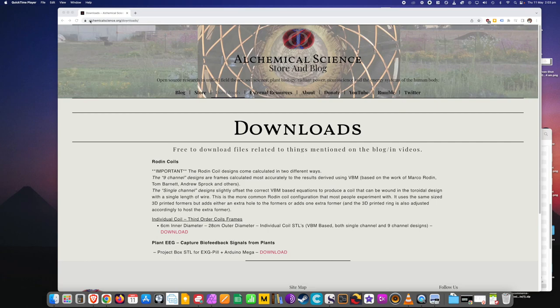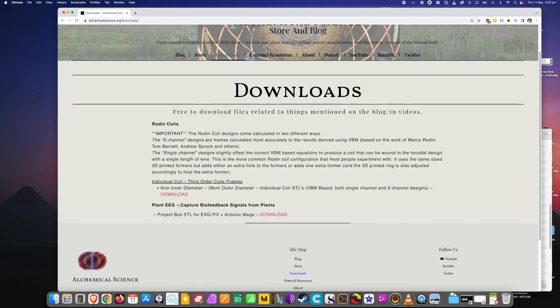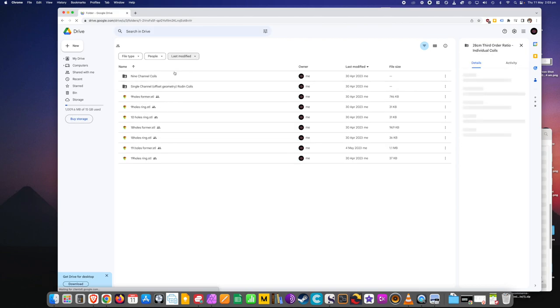If you're printing the coil yourself, you just need to jump on the downloads page, the alchemicalscience.org website, and you'll see individual coil third-order coil frames, 6cm inner diameter by 28cm outer diameter. If you click on the download button, it'll open up a Google Drive folder that has all of the files here to make all of the different coils.